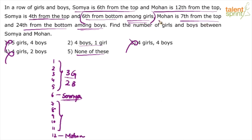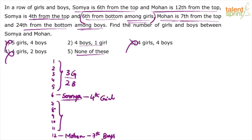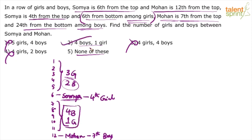Mohan is 7th from top among boys — meaning Mohan is the 7th boy. So if Mohan is the 7th boy, there should be 6 boys above Mohan. Like Soumya was the 4th girl, so 3 girls were above her. Similarly, Mohan is the 7th boy, so 6 boys are above Mohan. We already know that 2 boys came in those 5 positions, so the other 4 boys come here. That means in those 5 positions, 4 are boys — and if 4 are boys, obviously 1 is a girl. So the answer is: between Soumya and Mohan, there are 4 boys and 1 girl.